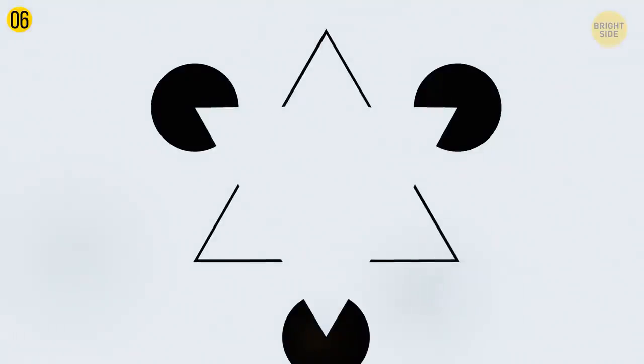When most people see this image, they immediately spot a triangle. It's formed by the three figures. Each of them looks like a pizza with a missing piece. This triangle also looks brighter than the background. In reality, though, there's no triangle. And the whole picture has the same brightness.